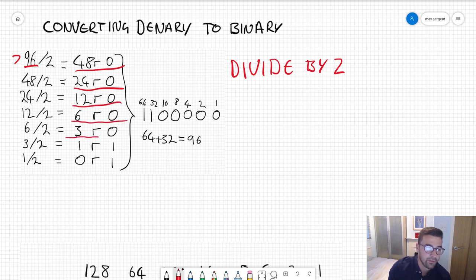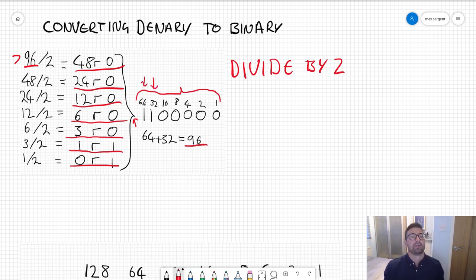6 remainder 0, 3 remainder 0, 1 remainder 1, 0 remainder 1. Then you just collect up the remainders and reverse them to give you this number: 1, 1, then the rest zeros. We can check the column headings here: 64 add 32 is 96, so that conversion worked fine.